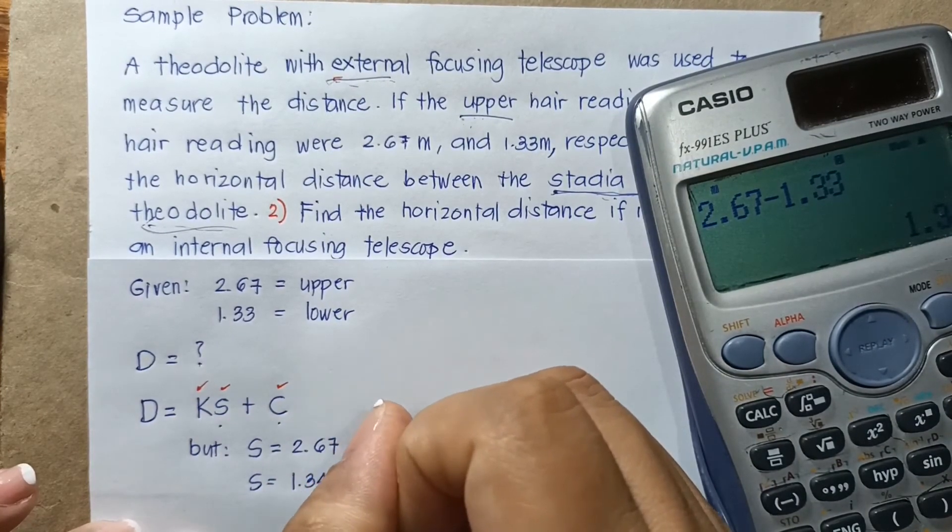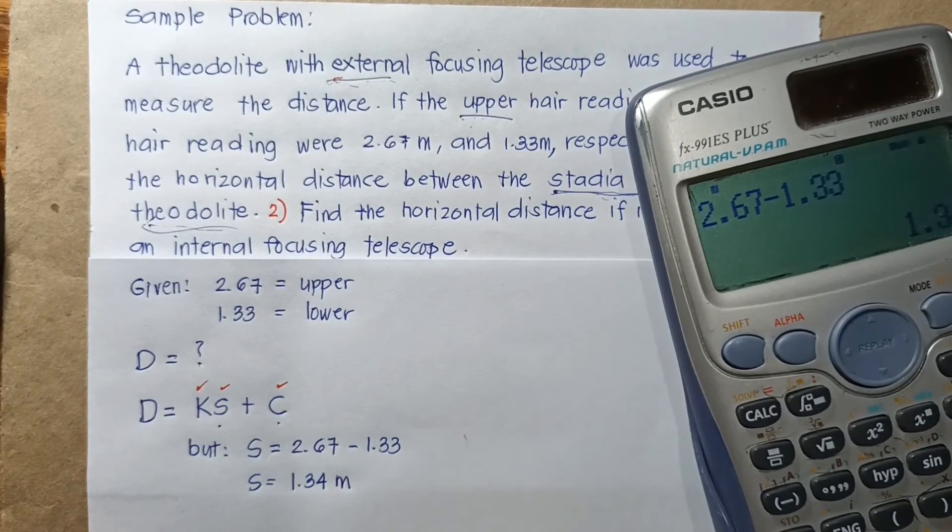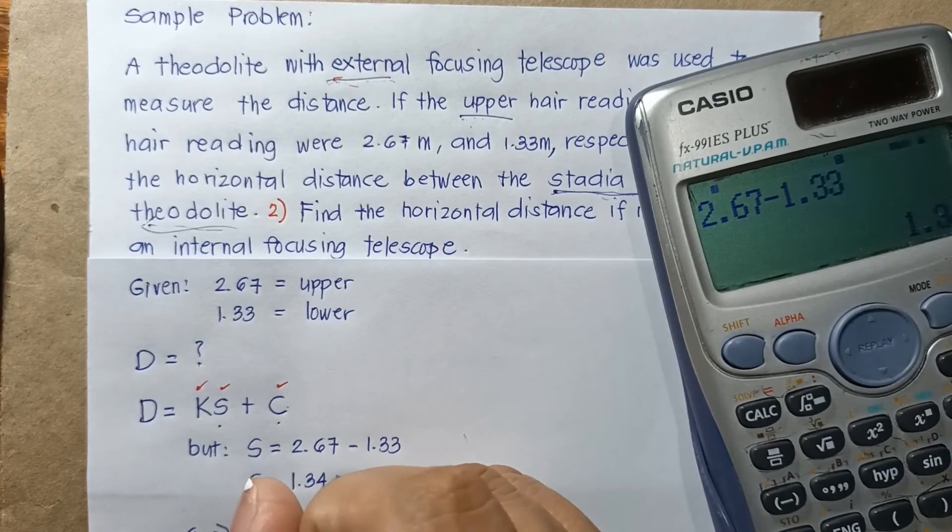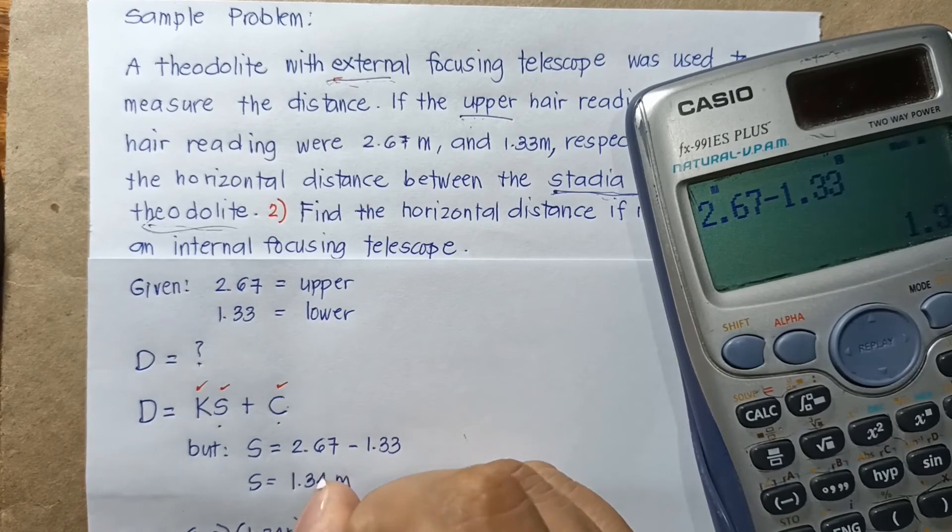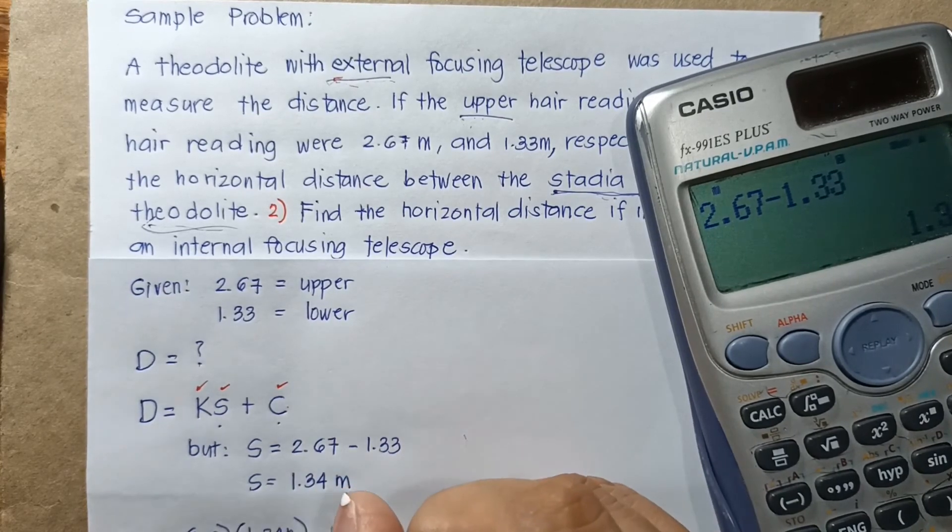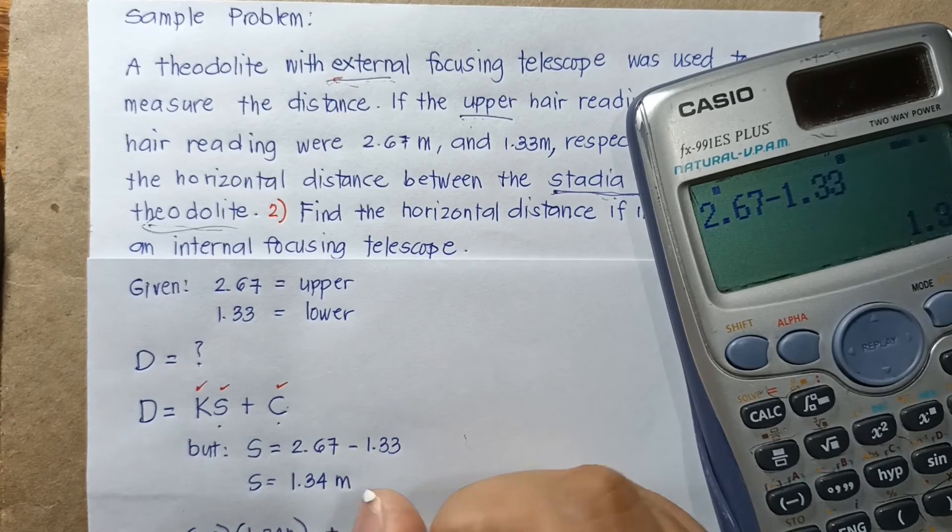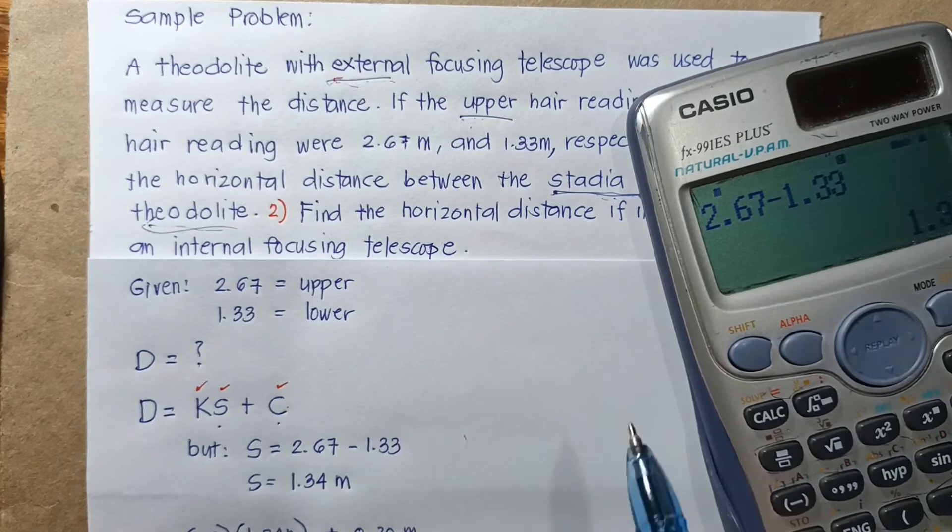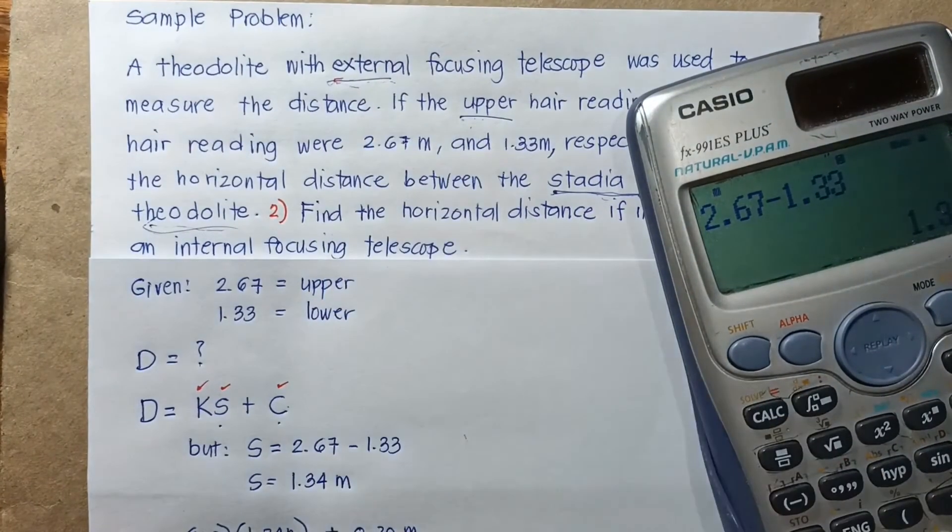This is, of course, in meters. Substituting the value of S to this formula, we can say that we have 100 times S, which is 1.34, this is in meters, and you have plus C, C is 0.30 meters. So because of that external focusing telescope, then finally it will give you...